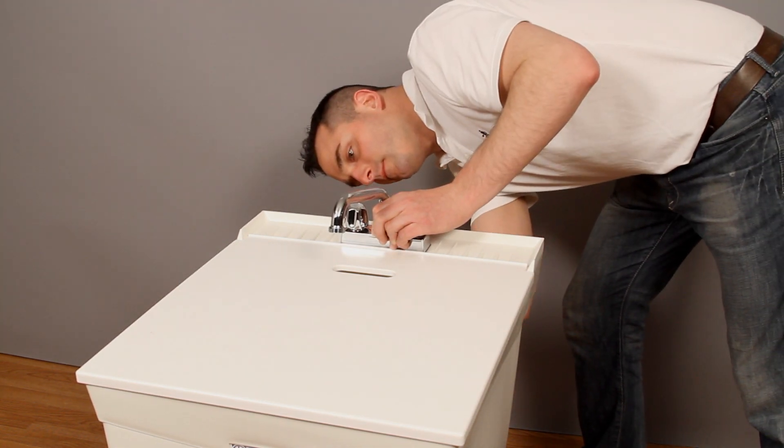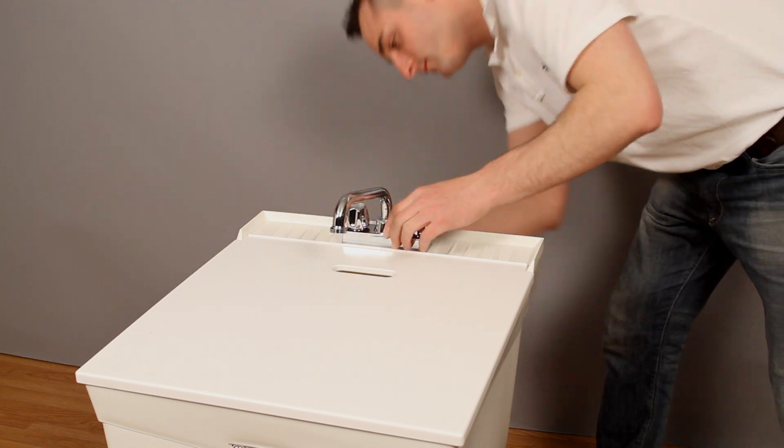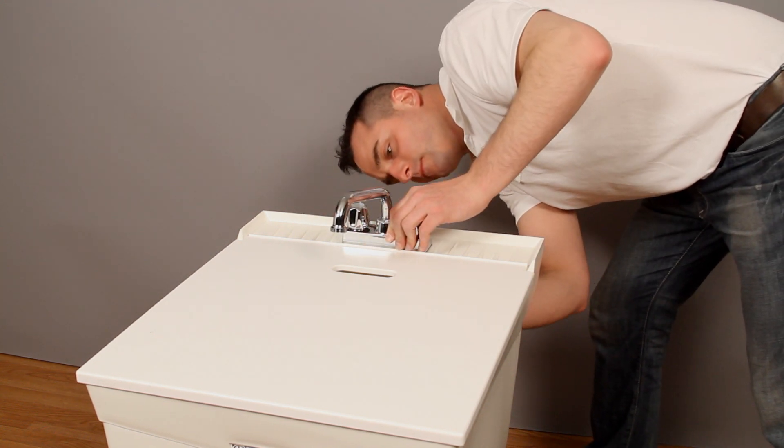Mount the faucet to the rear ledge and tighten the lock nuts. Connect the supply line and P-trap to complete the assembly.